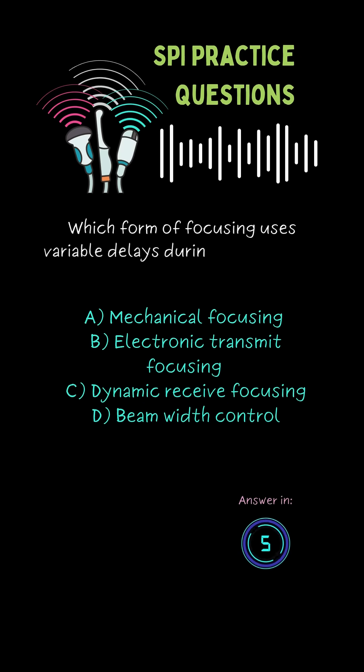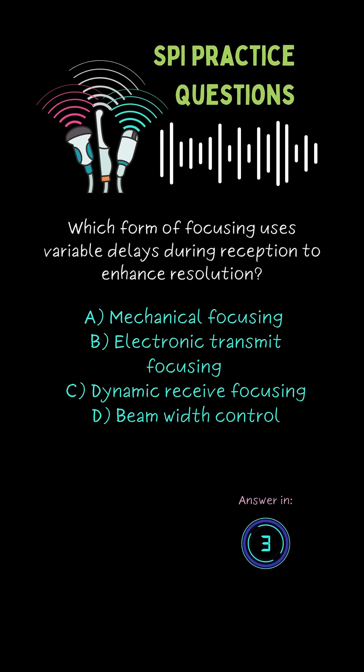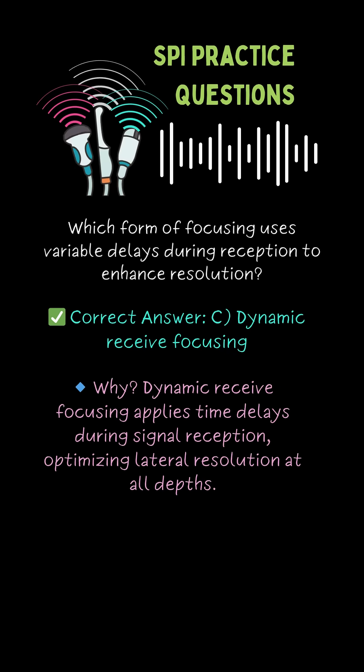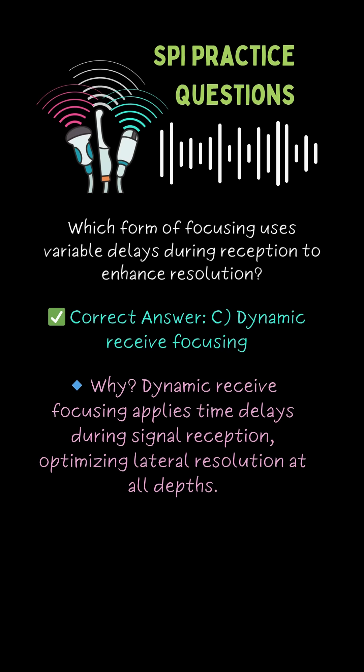Which form of focusing uses variable delays during reception to enhance resolution? C. Dynamic receiving focus.